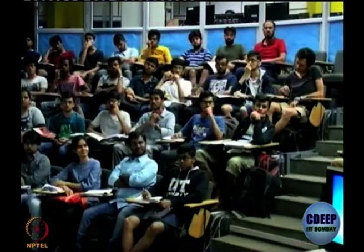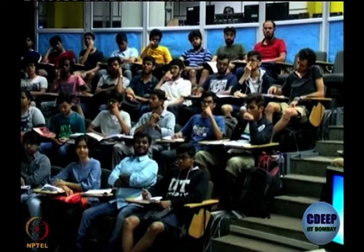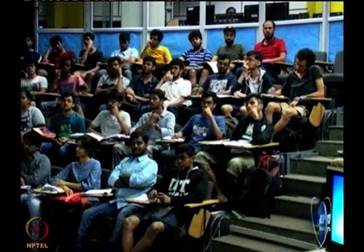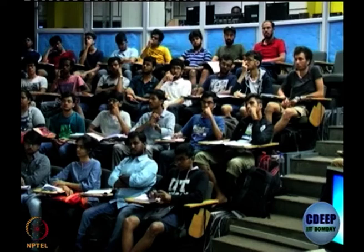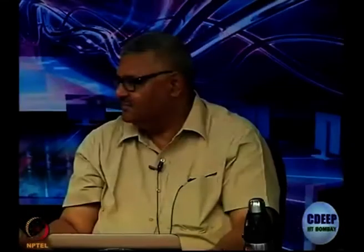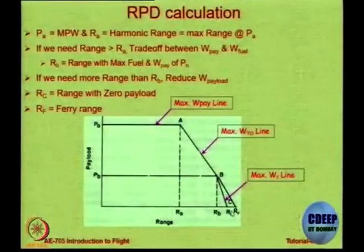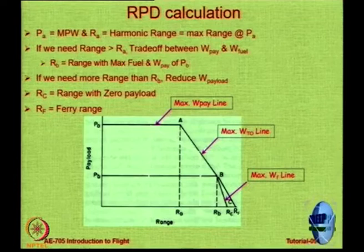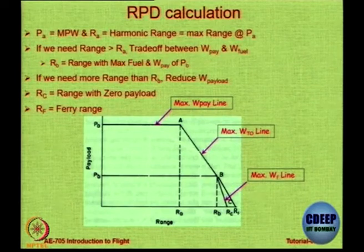RF is distinct from RC. Along RC you do not consume reserve fuel — going from B to RC you travel more distance by reducing payload but reserve fuel is untouched. RF is a special theoretical point corresponding to how far you can go with all fuel including reserve fuel consumed. RC means range with mission fuel only; RF means range with total fuel including reserve. The line between B and RF should actually be removed from the diagram — RF is just a single theoretical point.